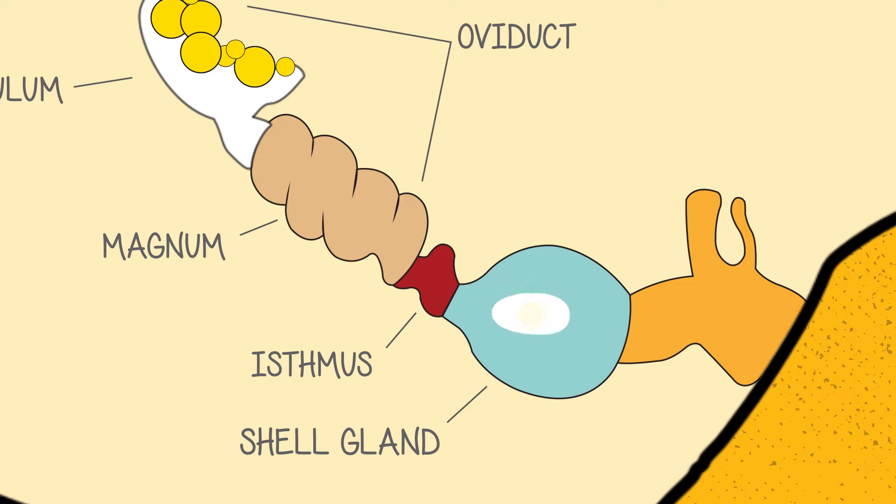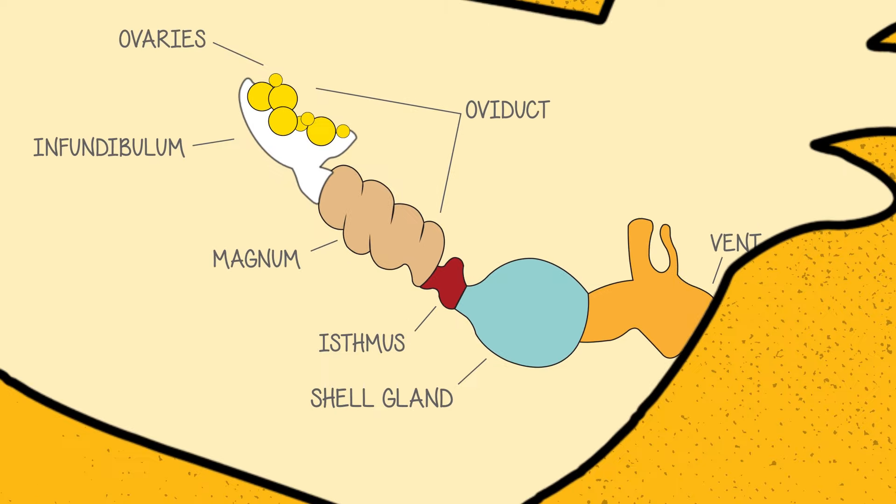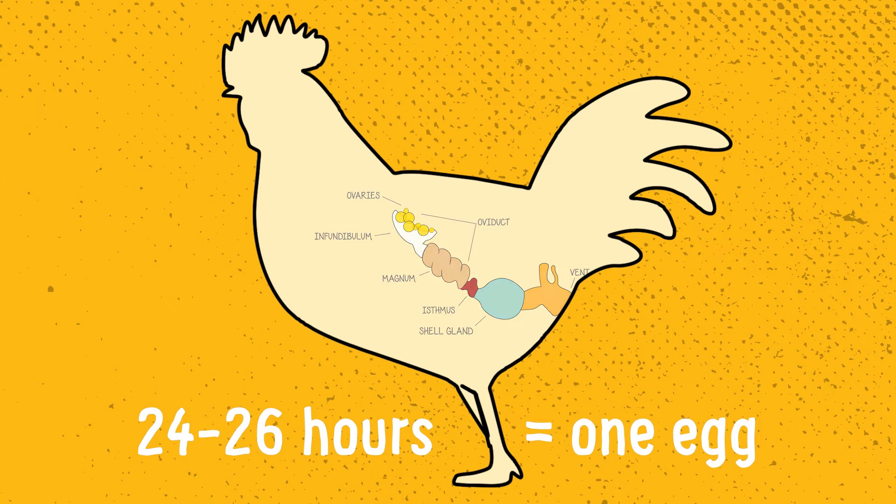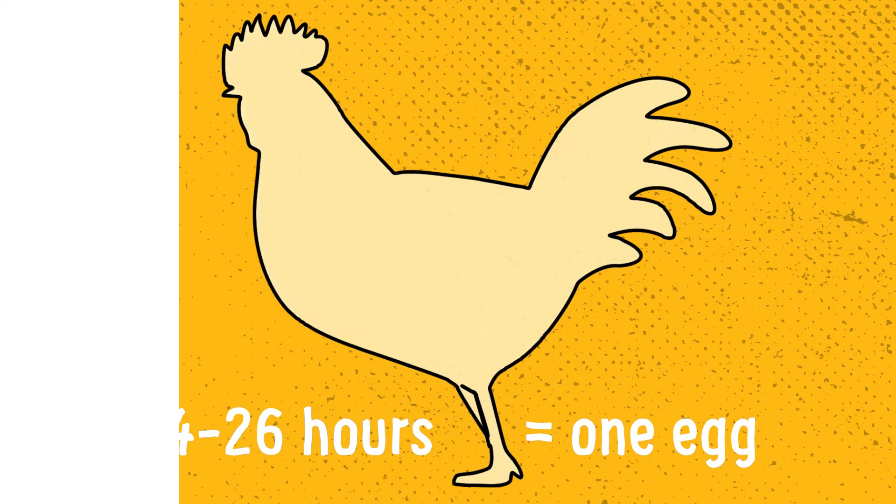Finally, the egg is laid through the vent and an egg is complete. The process takes between 24 and 26 hours to create a single egg. And then, the process starts all over again.